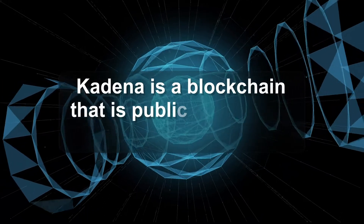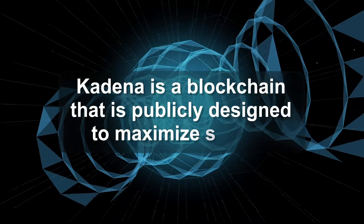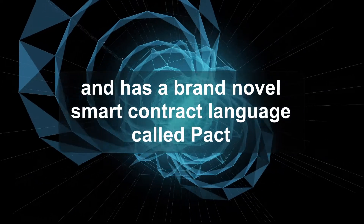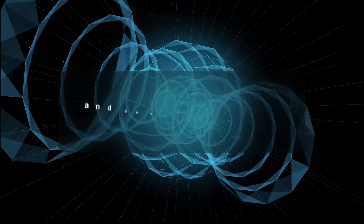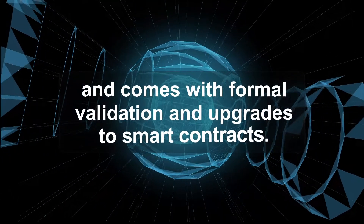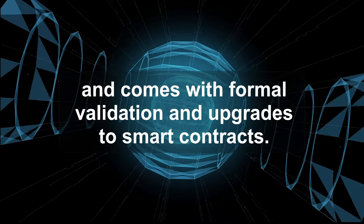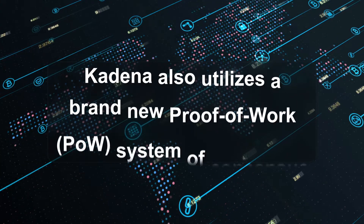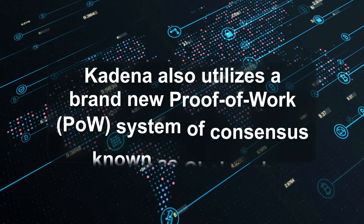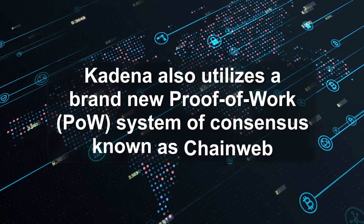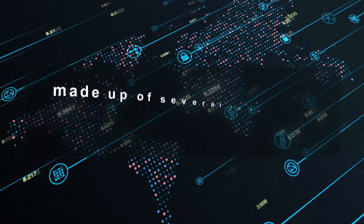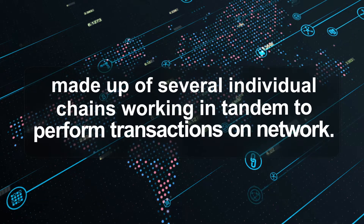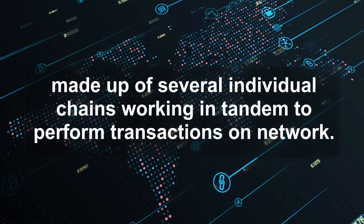Kadena is a blockchain that is publicly designed to maximize scaling and has a brand novel smart contract language called PACT, which comes with formal validation and upgrades to smart contracts. Kadena also utilizes a brand new proof of work (POW) system of consensus known as chain web, made up of several individual chains working in tandem to perform transactions on the network.